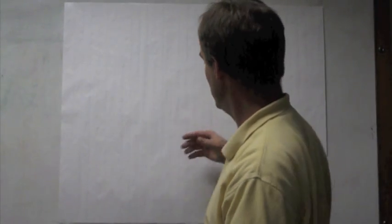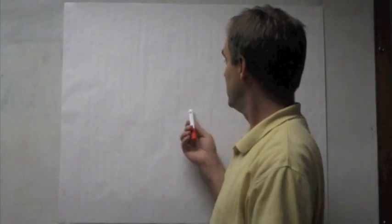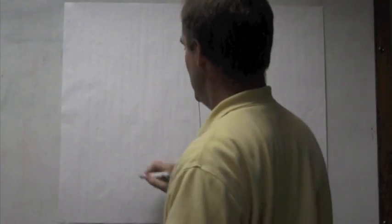In your pairs, in your groups, in your table groups, I want you to take one of these big pieces of paper, your sub will make sure you get it, and I want you to split these big pieces of paper off into four sections. That's easy enough to do with lines, right? Okay.